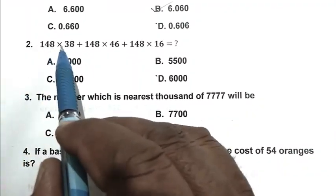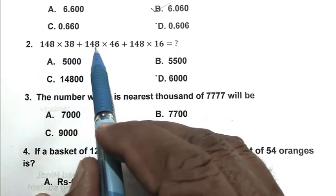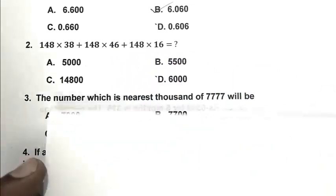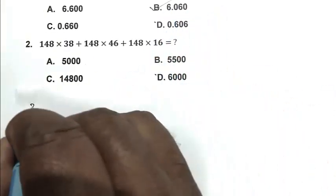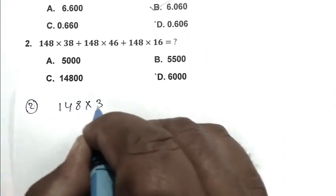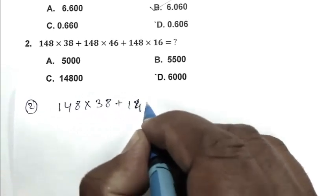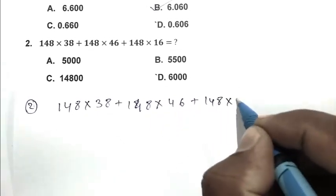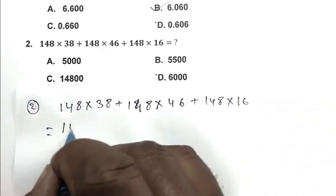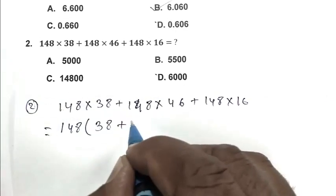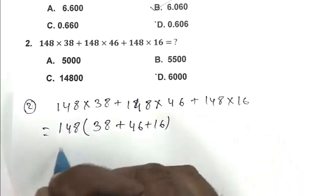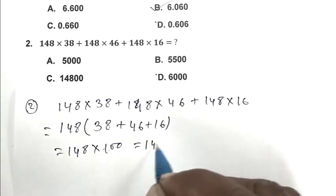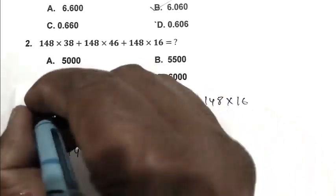Question number 2: 148 multiplied by 38 plus 148 multiplied by 46 plus 148 multiplied by 16 equal to. So first we write the expression. We take 148 as a common, we get 38 plus 46 plus 16. That is 148 multiplied by 100. So it becomes 14800. C is the right answer.